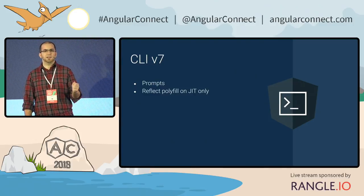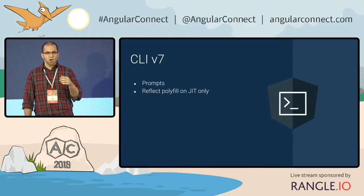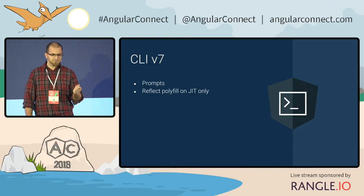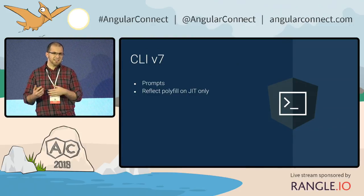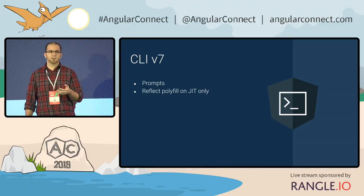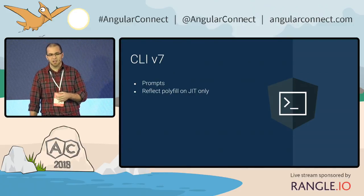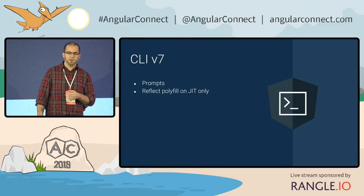The other thing that we did is to only load the reflect polyfill on JIT builds. This is nice because only JIT builds actually need this reflect polyfill in most circumstances, and that shaves about 20 kilobytes off your production bundle.